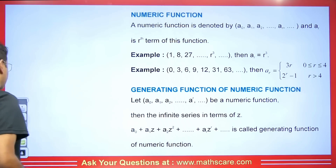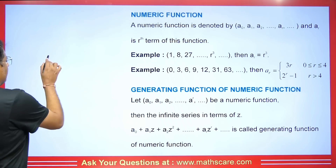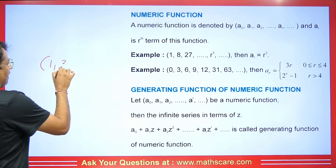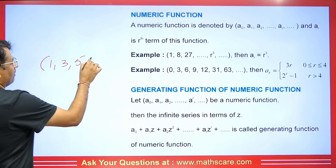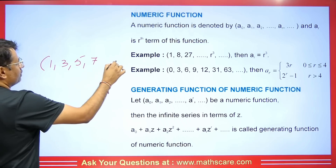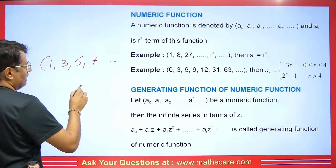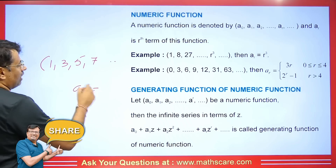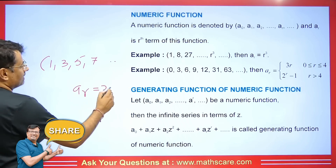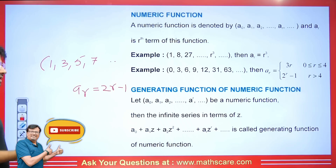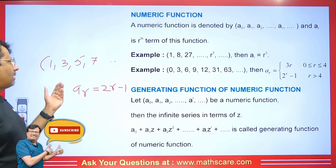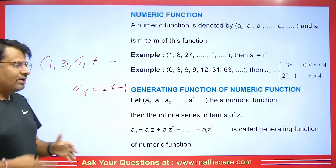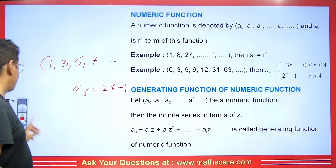Let's take another example. Suppose we have 1, 3, 5, 7 — an arithmetic progression. The Rth term will be 2R − 1. As soon as you substitute the value of R, you can easily verify this. By this way, we can understand numeric functions.